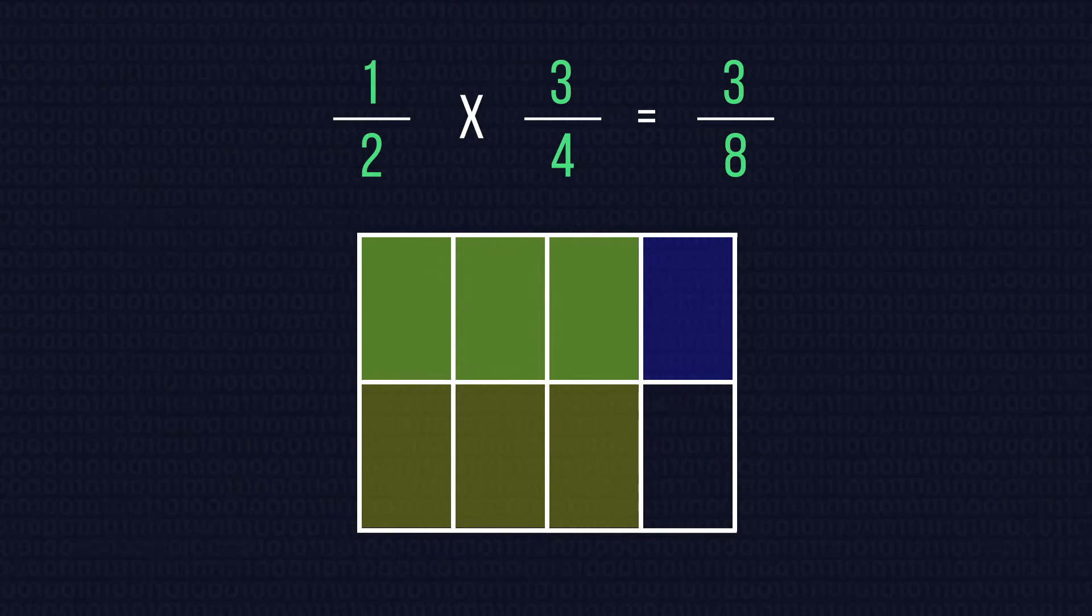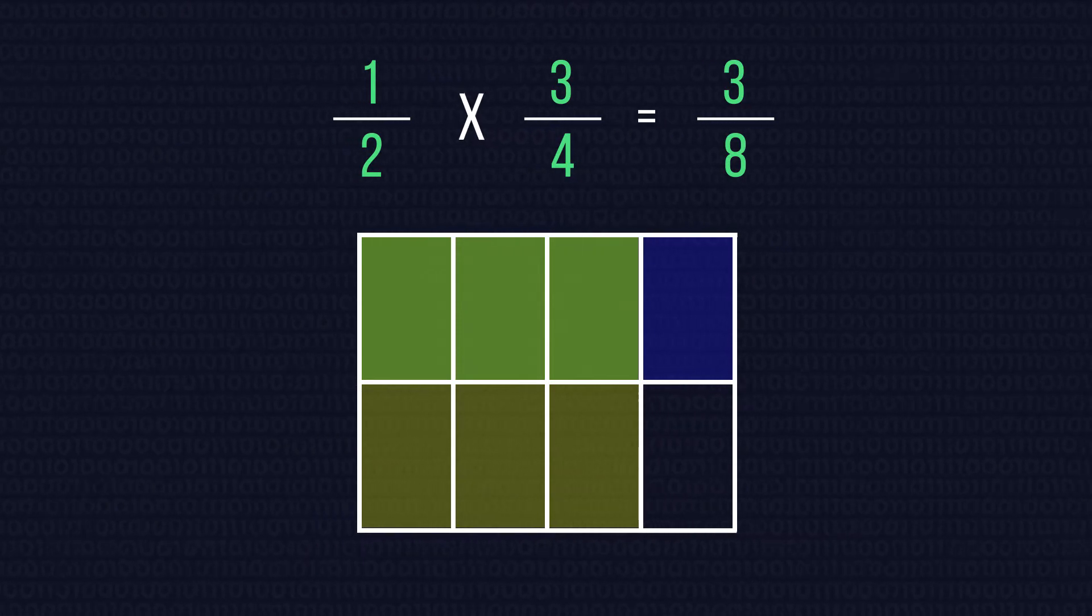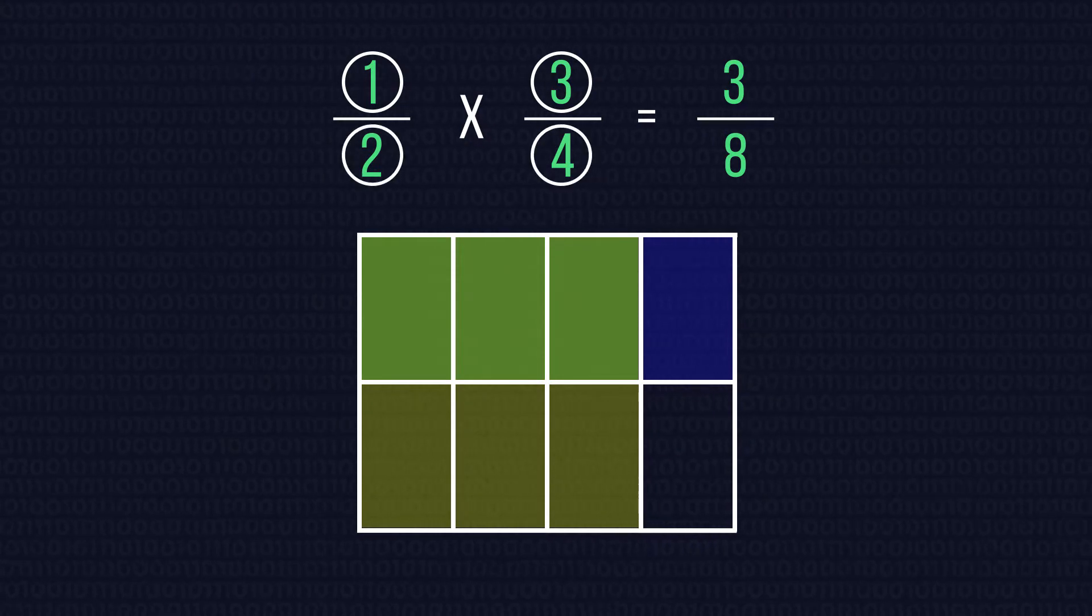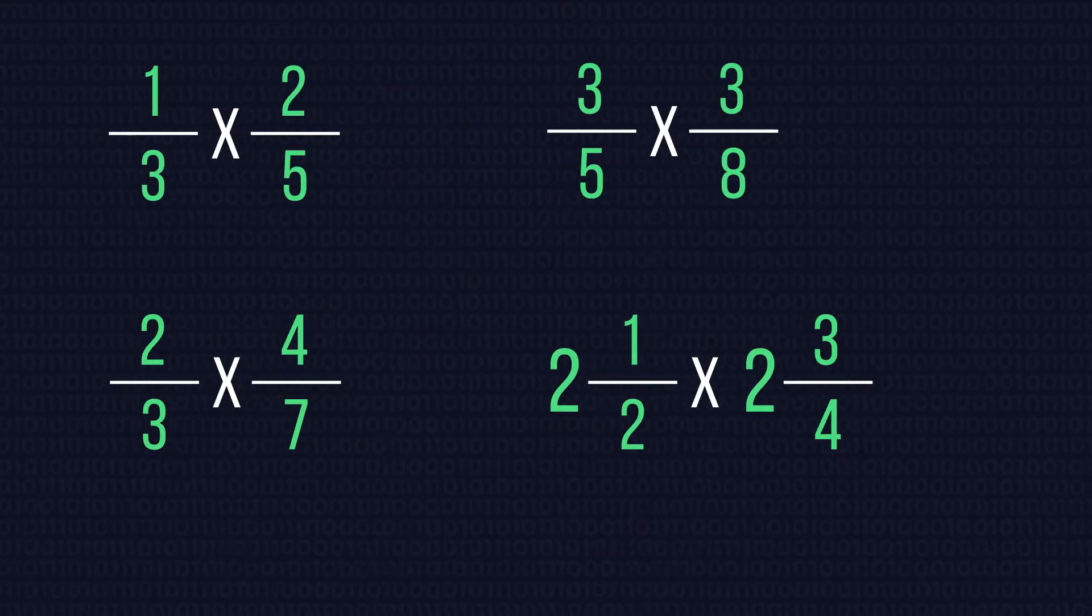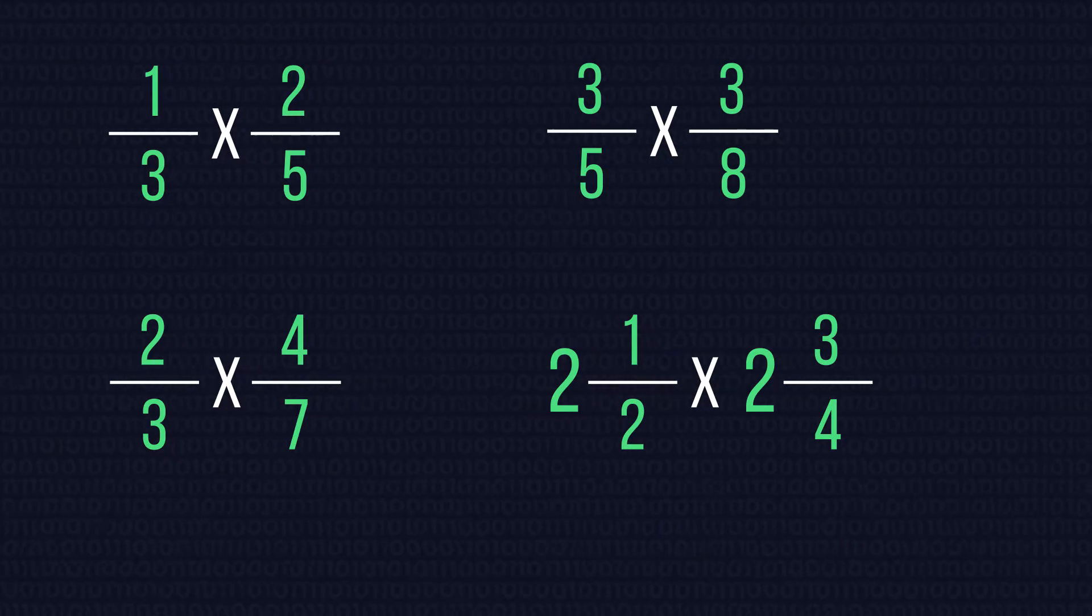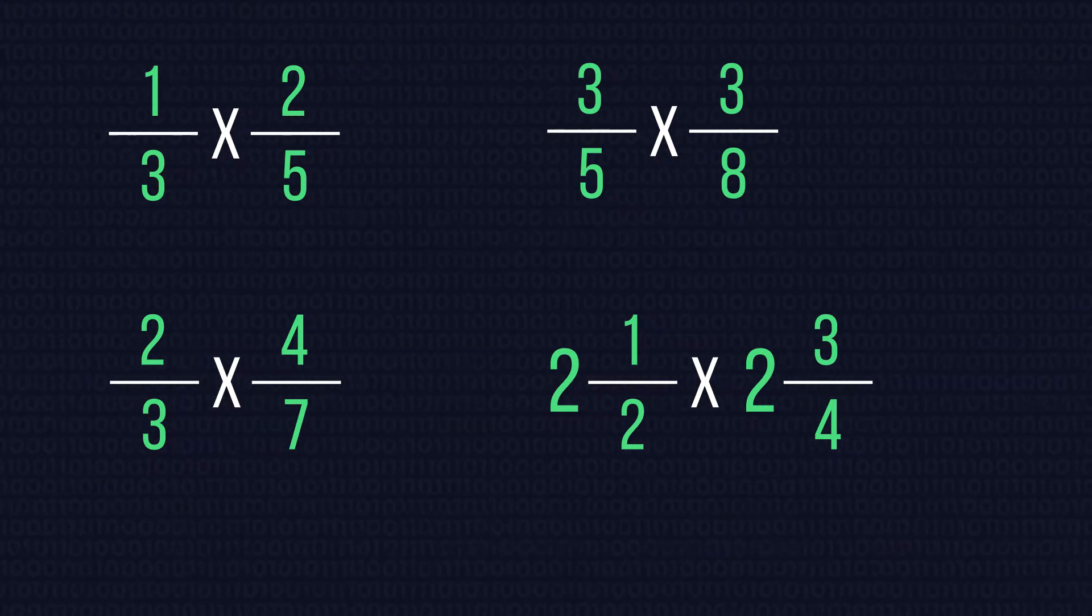To therefore multiply two fractions together, we must multiply the numerators and the denominators by themselves. Have a go at these questions here. How did you do?